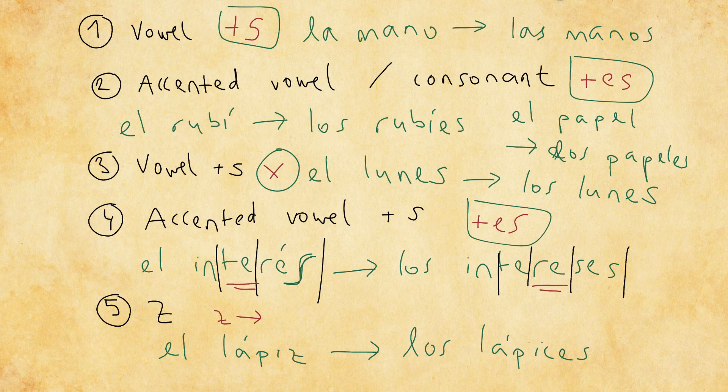So z becomes c, and we add es. That is a general guideline for any words that end with a z, if you want to make a plural out of them.